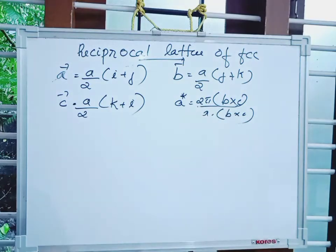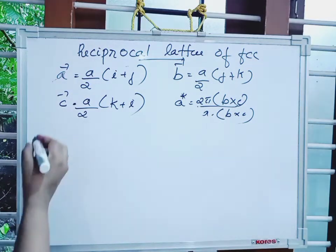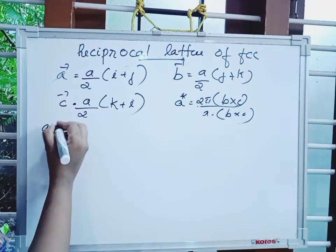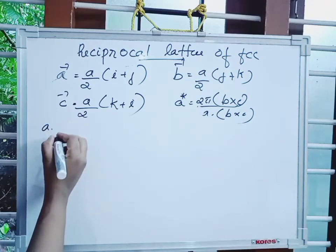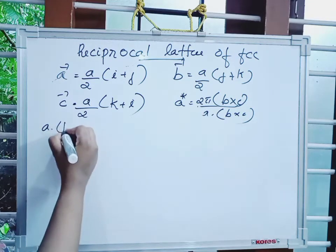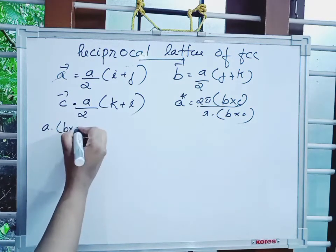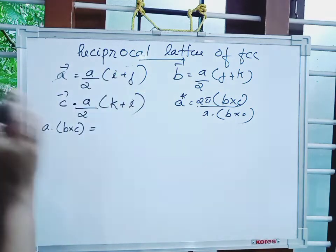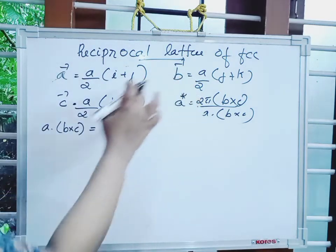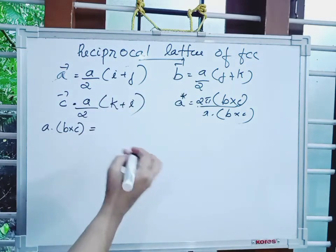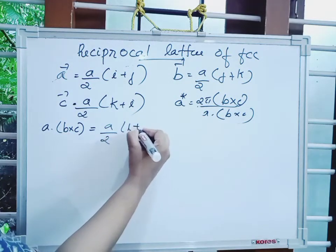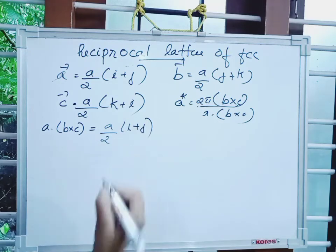Here we compute a · b × c, which is the volume of the unit cell. We take a = (a/2)(i + j) and compute the cross product b × c. This gives us the scalar triple product a · (b × c).